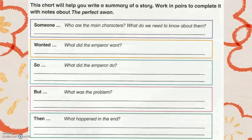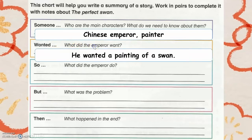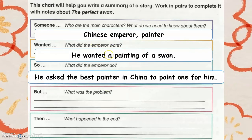Someone — who are the main characters? What do we need to know about them? The Chinese emperor and the painter. Wanted — what did the emperor want? He wanted a painting of a swan. So, what did the emperor do? He asked the best painter in China to paint one for him.